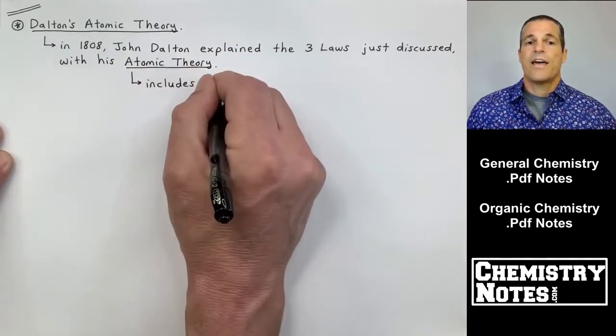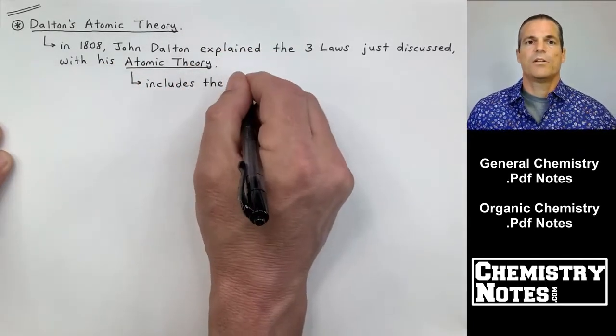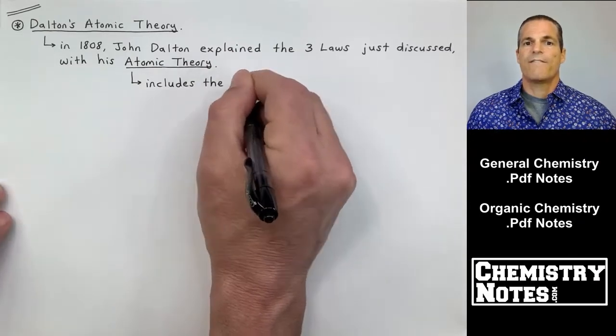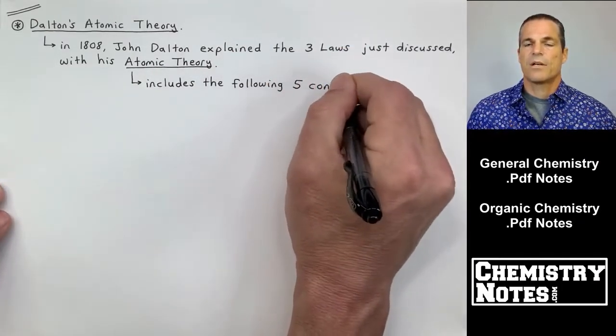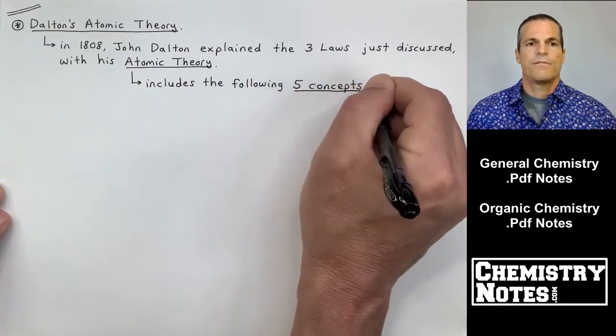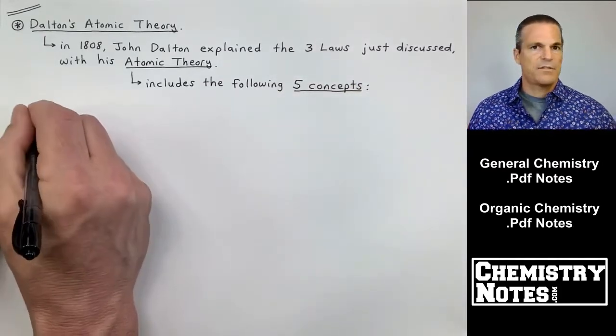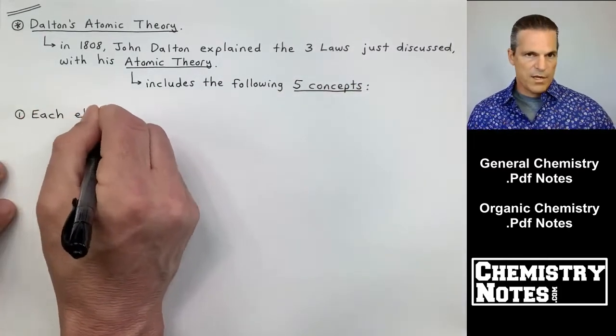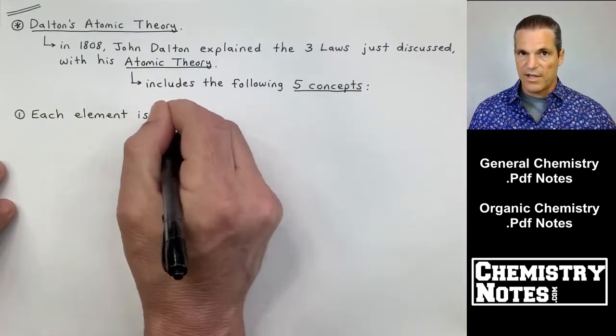Now, that atomic theory includes the following five concepts. Five statements, five postulates, five concepts, whatever you want to call it, there's five listings here that he makes.